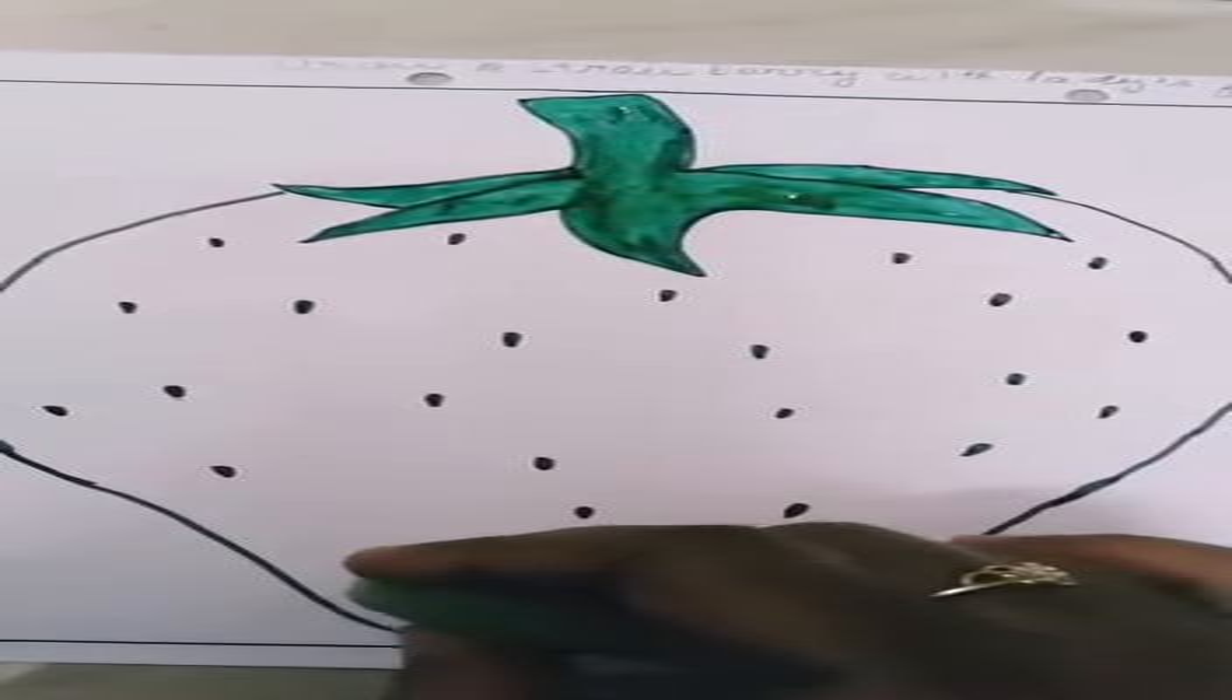Now we can see the green color. Then we will cut the lady finger and dip it in red color. Then we will press the stamp. We will dip it and press it repeatedly to complete the strawberry.